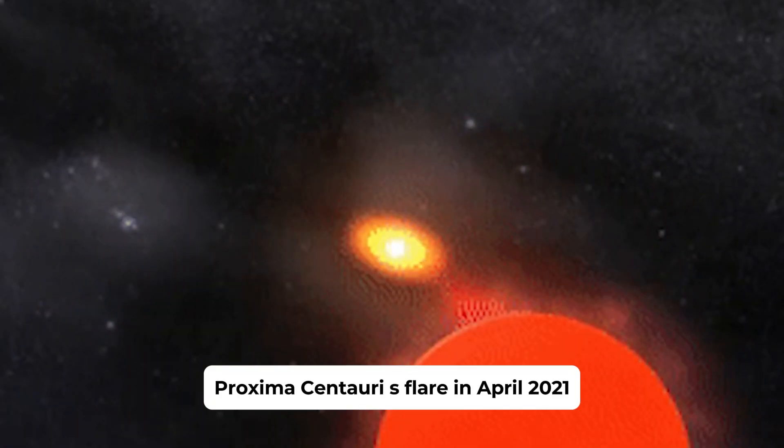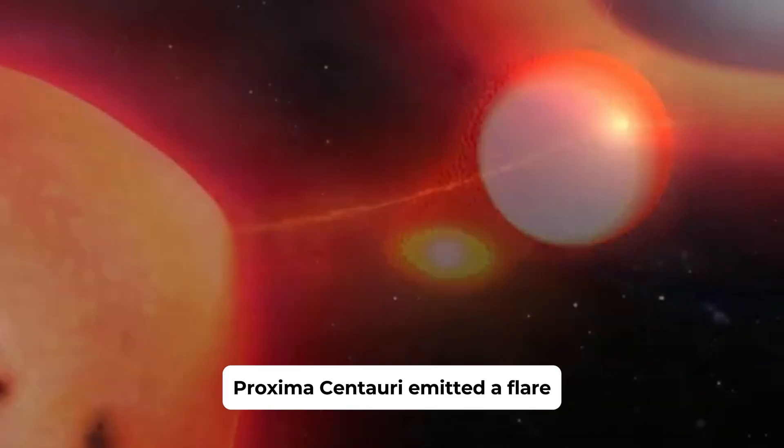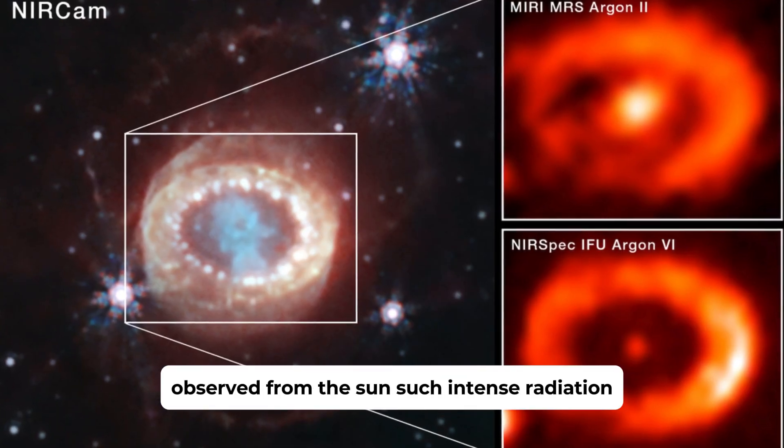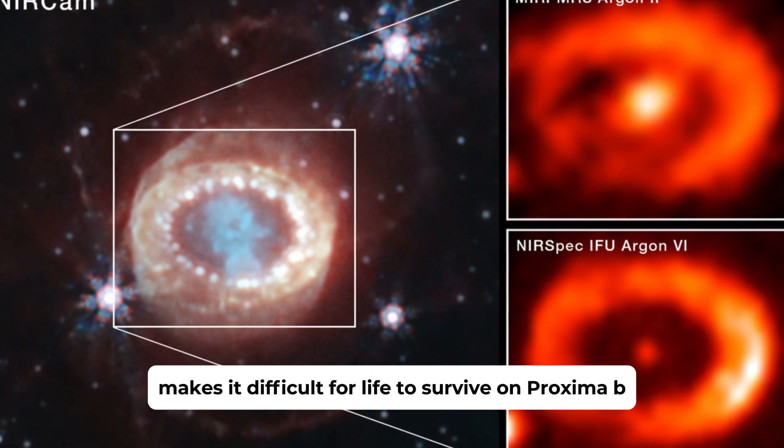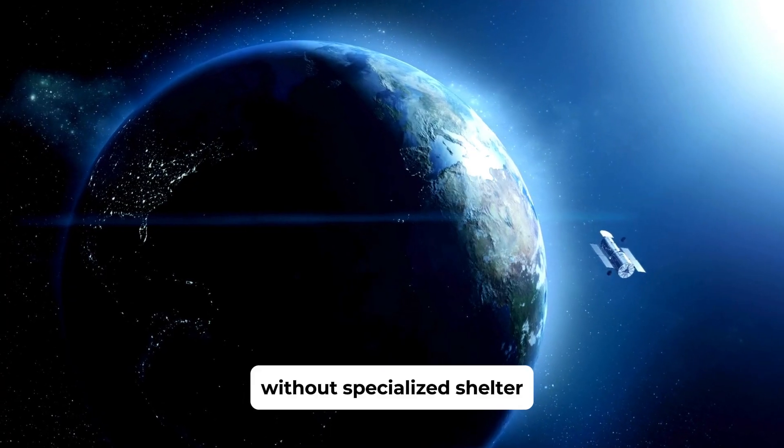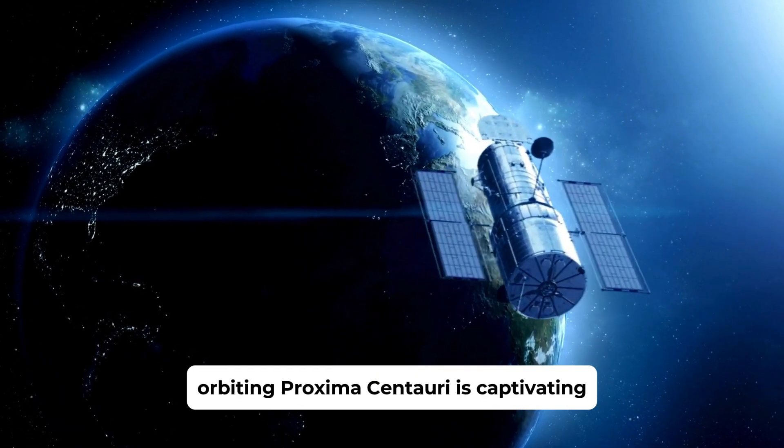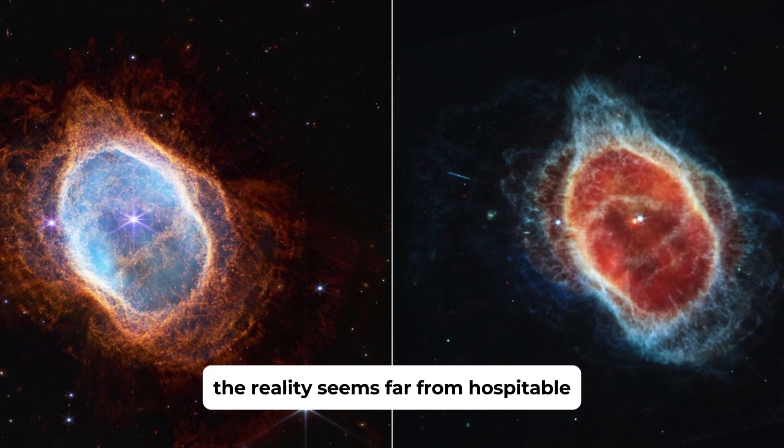Proxima Centauri's Flare. In April 2021, Proxima Centauri emitted a flare 100 times more potent than any flare observed from the Sun. Such intense radiation makes it difficult for life to survive on Proxima b without specialized shelter. While the idea of a habitable planet orbiting Proxima Centauri is captivating, the reality seems far from hospitable.